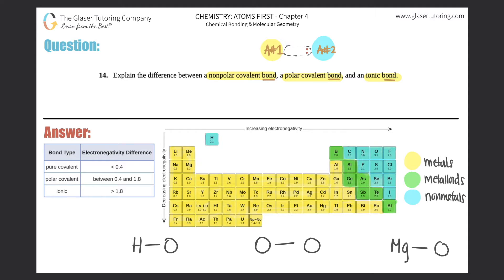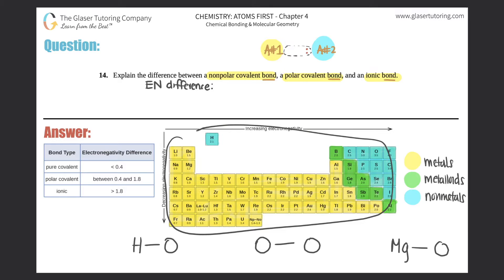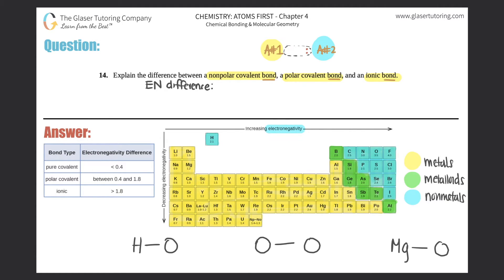These all come down to electronegativity difference — I'll put 'EN difference,' and difference means subtraction. All the elements on the periodic table have certain electronegativity numbers. For example, magnesium has 1.2 and boron has 2.0. Electronegativity is just a fancy way of saying an atom will attract...